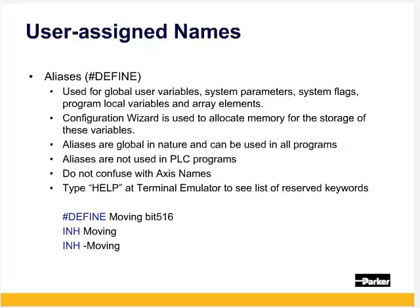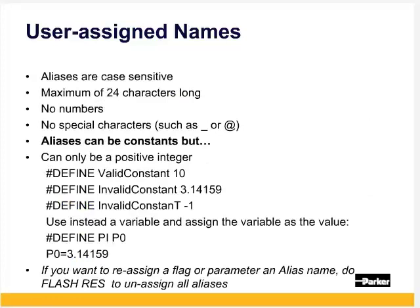INH minus moving would wait until the bit is clear. Aliases are case sensitive. They can be a maximum of 24 characters long, but cannot include numbers or any special characters, such as underscore or the at sign.